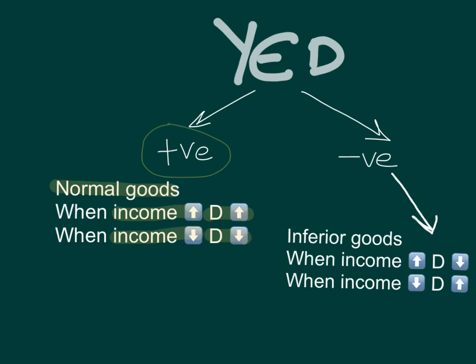If you calculate an income elasticity of demand and it gives you a negative value, this good is an inferior good. An inferior good is one you buy less of when your income rises — when income increases, demand decreases — and more of when your income falls. A good example is public transport: the poorer people are, the more they rely on it, but when people have higher incomes, they buy cars and demand less public transport. So, a positive YED means a normal good; a negative YED means an inferior good.